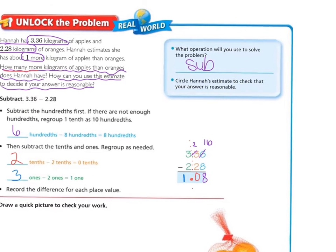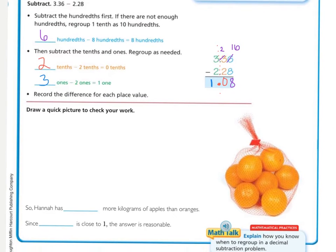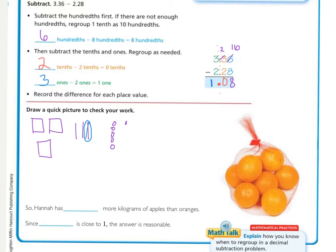We recorded the difference as we went. Now we should draw a quick picture to show our work. Remember, on subtraction, you only draw the top number. So we have three ones, three tenths, and six hundredths. We knew that we needed to break one of the tenths up into ten hundredths.